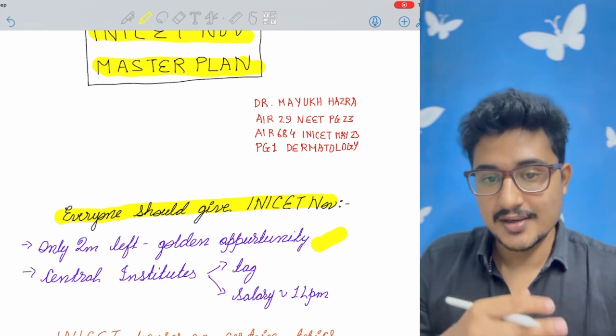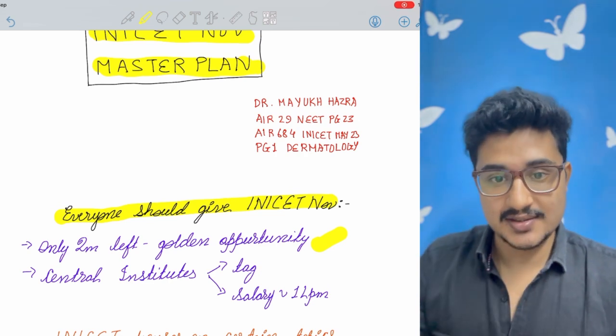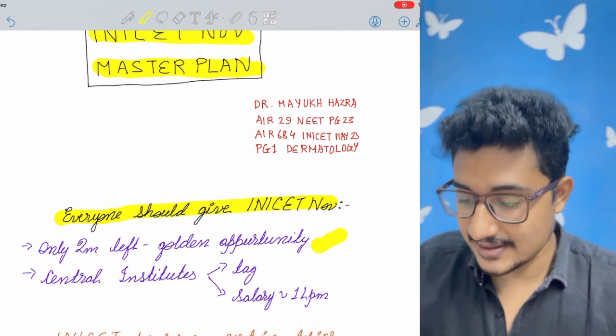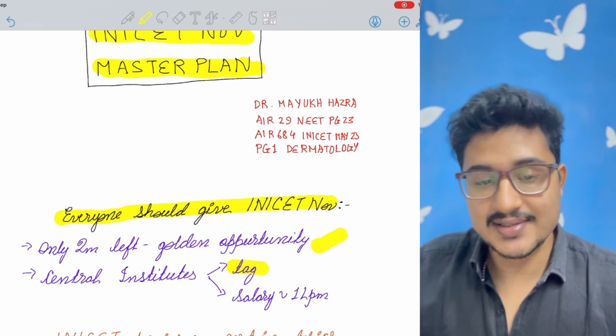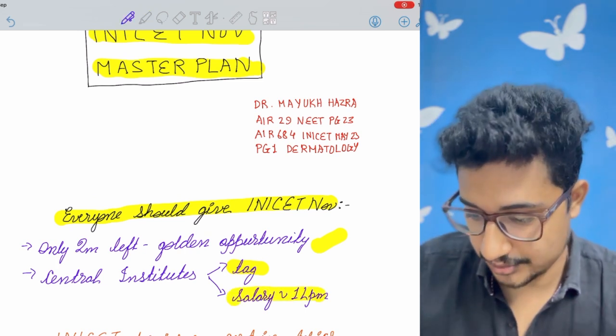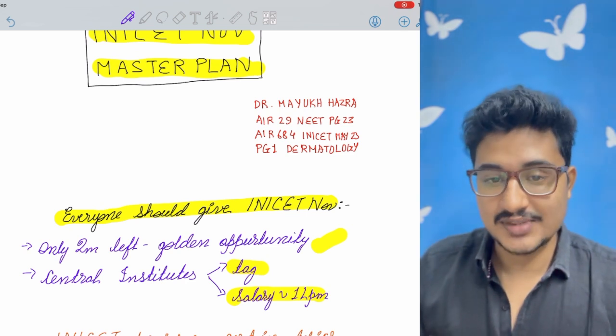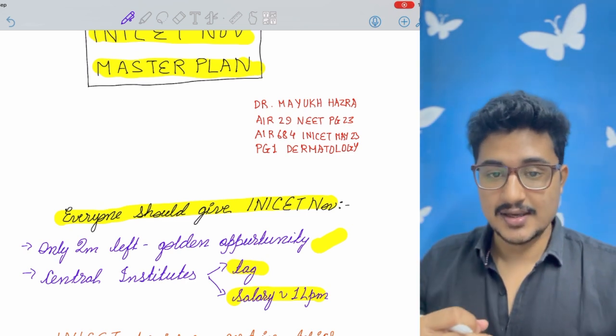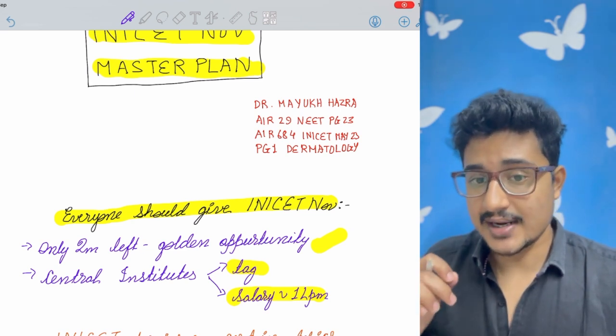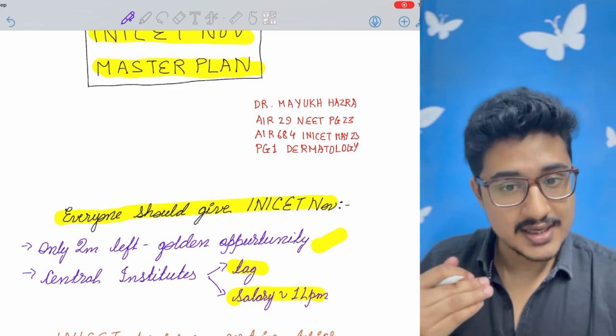Because it has never happened that after P.G., the INICET of November is so much faster. And the main thing about INICET is that you get the Central Institute which has a tag and has a salary of 1 LPM about. So I know one of my batchmates, he left RML Medicine and gave the INICET while studying there and he cracked it and got admission into AIIMS New Delhi in Medicine.